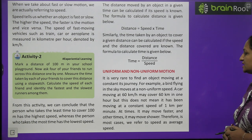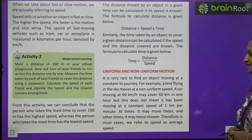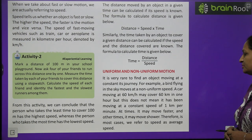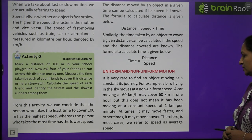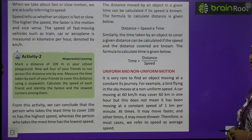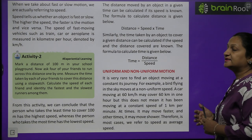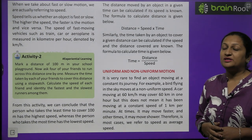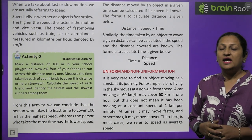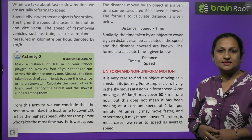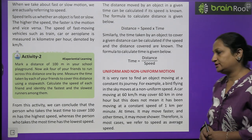It is very rare to find an object moving at a constant speed throughout its journey. For example, a bird flying in the sky moves at non-uniform speed. A car moving at 60 km/h may cover 60 km in 1 hour, but this does not mean it moves at a constant speed of 1 km per minute at all times — at times it may move faster and other times slower. Therefore, in most cases we refer to speed as average speed. So when we calculate the speed of a vehicle on a road, we call it average speed.